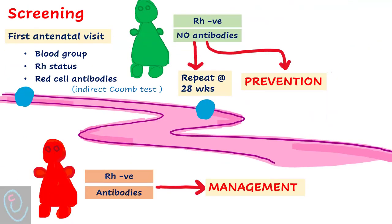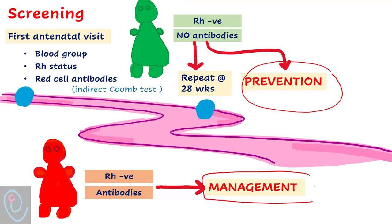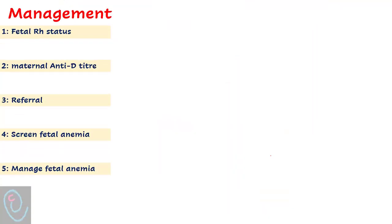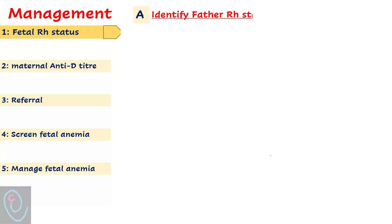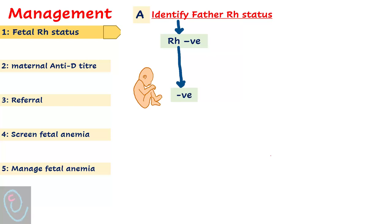Those are the preventive steps in the non-sensitized woman. Regarding management in sensitized women, the first step is to assess the fetal RH status. Start with assessment of the father's RH status. If the father is RH negative, the fetus is RH negative. If the father is RH positive, genotyping is required.